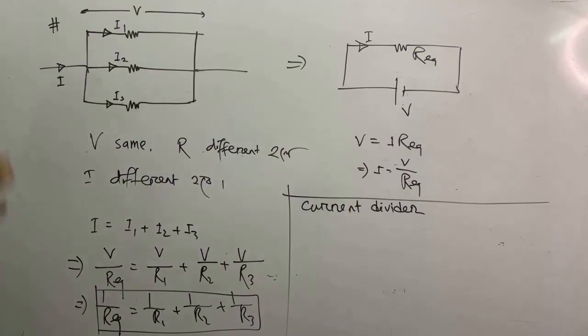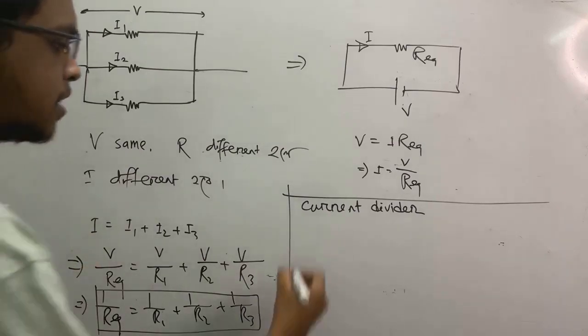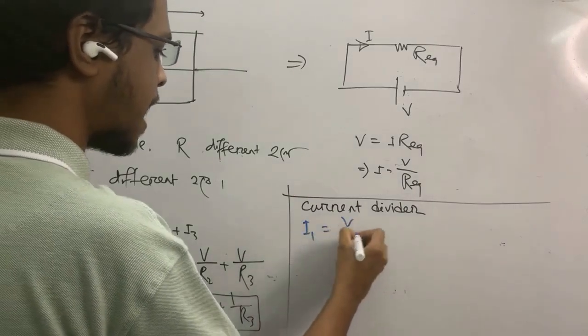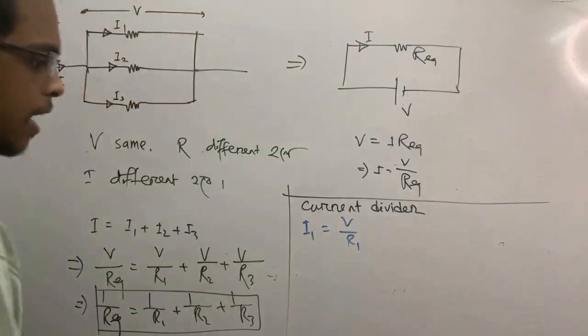Current divider. So i1 is equal to v by R1. Right?